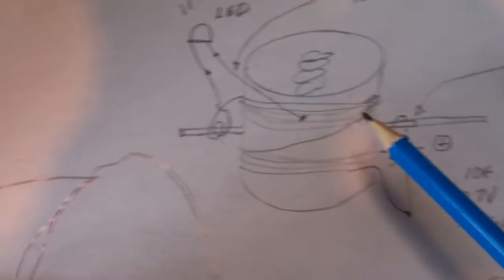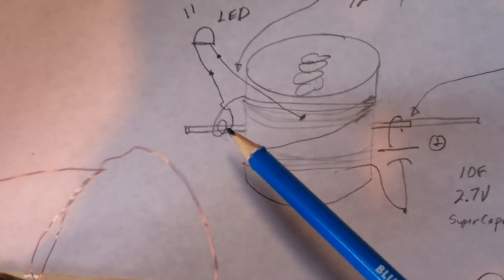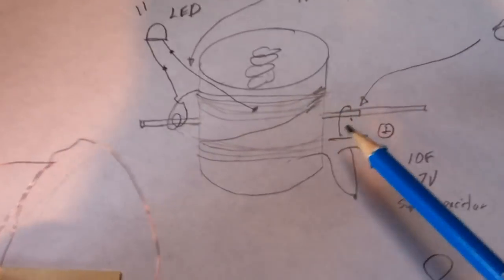And it's just got a simple commutator using the steel shaft. This is the solid contact, and this is the make and break.